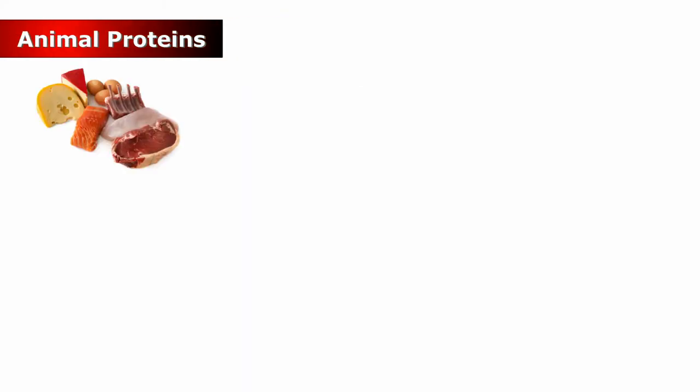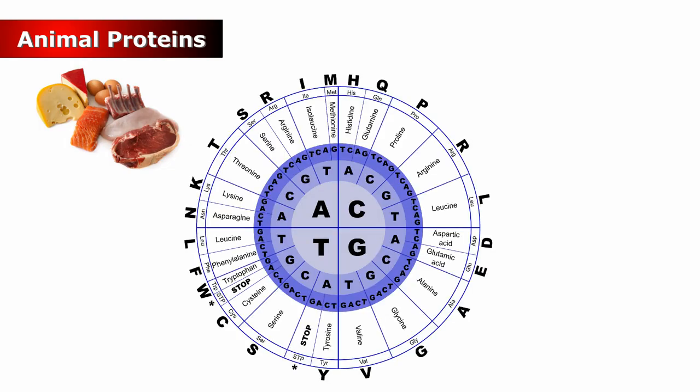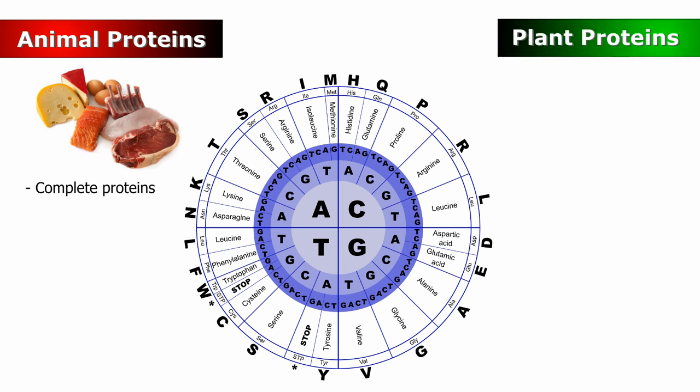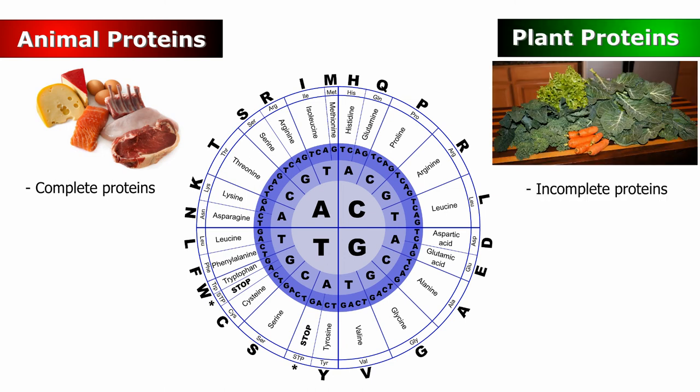Animal protein molecules contain repeated use of all 20 amino acids and are complete proteins. Most plant proteins are incomplete because not all 20 amino acids are used in building each type of plant protein molecule.